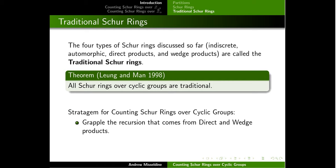If one wanted to count all the possible Schur rings over a cyclic group, it would be very difficult to go through all the partitions and decide which ones are Schur rings, because the number of partitions just grows too rapidly. So we need a different approach. The two big things to deal with are: the direct product and wedge product constructions, which are recursive constructions based on proper subgroups; and the need to list the indecomposable Schur rings — those which cannot be written as a direct product or wedge product of any kind.